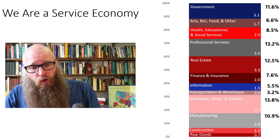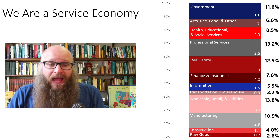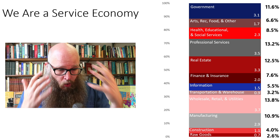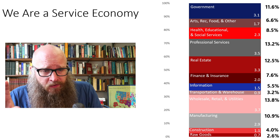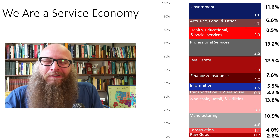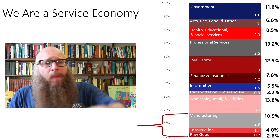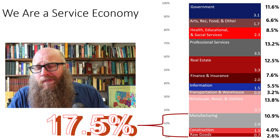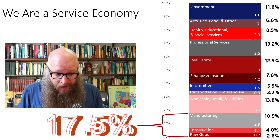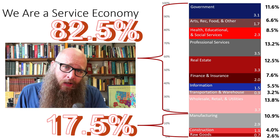Now we get to physical production. Manufacturing is 10.9% of the economy. Construction is 4%. Raw goods — all of agriculture, mining, oil and coal extraction, lumber and forest goods — is 2.6%. Agriculture used to be half of the output, and now it's inside another category at less than 2%. Adding up all of the goods, it's 7.5% of the economy. So when we say goods and services, in today's economy it's mostly just services — that is 82.5% of the economy.